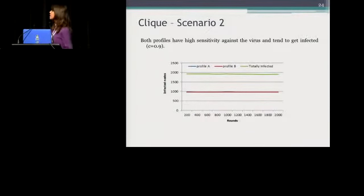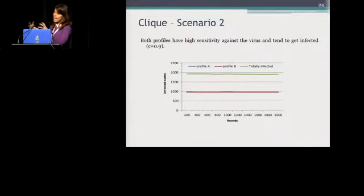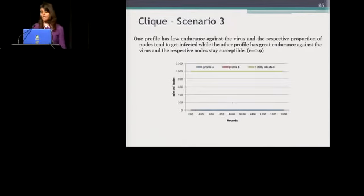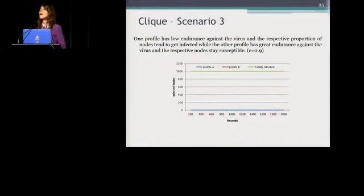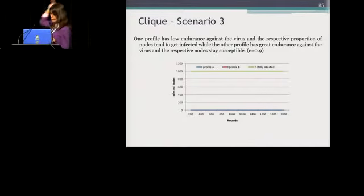In scenario two, the network is flooded. Profile B (the red one) and profile A, which is covered by profile B, are both flooded. We equally divided the nodes, so both profiles are flooded and the network is in epidemic — all are infected. In the third clique scenario, one profile goes down to zero and one profile goes up to the maximum, because one profile has very low sensitivity and tends to stay healthy, while the other has very high sensitivity and gets flooded.